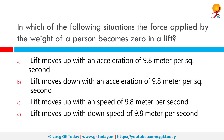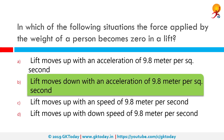In which of the following situations does the force applied by the weight of a person become zero in a lift? The correct answer is when the lift moves downwards with an acceleration of 9.8 metres per second squared, that is, with an acceleration equal to the acceleration due to gravity. This is known as apparent weight.